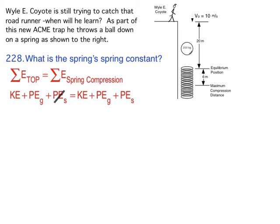Then I'll look at the bottom. At the bottom, is it moving? No, it's at maximum compression, so that kinetic energy is going to go away. At the bottom, is it higher than the other location? And the answer is no, so I'm going to get rid of that potential energy. At the bottom, is the spring compressed? Yes, it's at maximum compression, so I'll keep that.